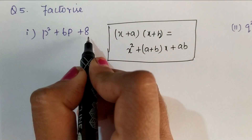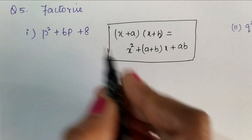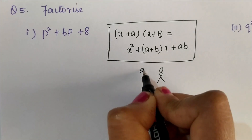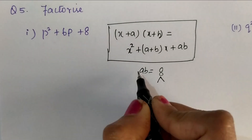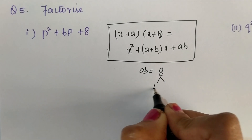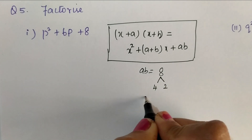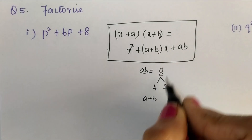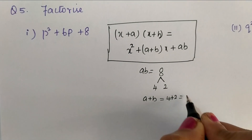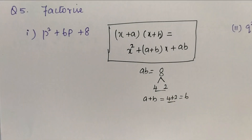Here we have ab equal to 8 and a plus b equal to 6. Now let us find the factors of 8. When you multiply the two factors, we should get 8, so we can write 4 and 2. 4 twos are 8. When you add a plus b, we should get 6. 4 plus 2 is equal to 6. So we can use these two factors.